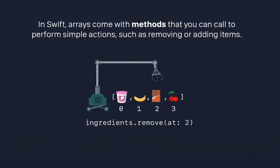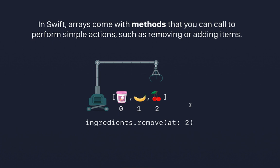If I want to remove something from the array, I use the array name dot remove and then specify from where to remove. So I say ingredients dot remove at index value 2, and whatever was at index position 2 gets removed.